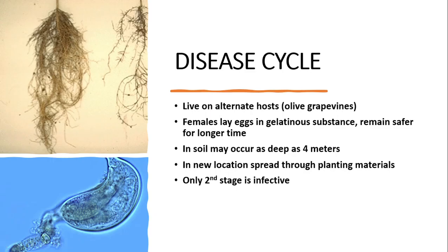Looking at the disease cycle, these nematodes live on alternate hosts like olive and grapevines. Females lay eggs in a gelatinous substance, which keeps them safe for a longer time in the soil. They may occur as deep as 4 meters in the soil, and in new locations they spread through planting material. Only the second stage juvenile, which is motile, is infective.